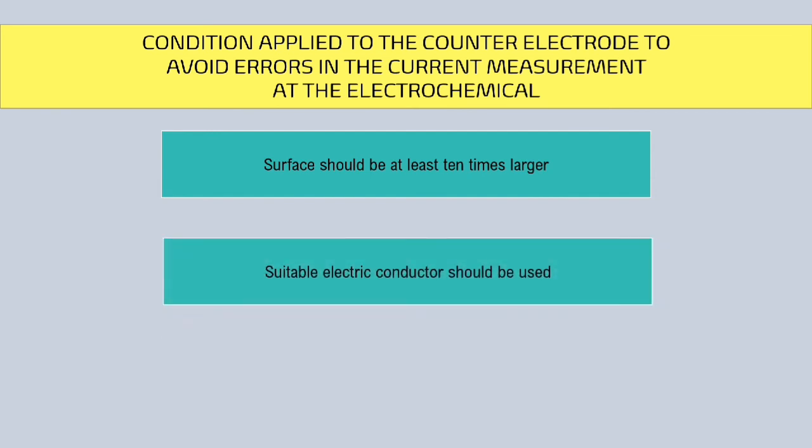Second, a counter-electrode should be made of a suitable electrical conductor. A small amount of current can escape through the interface at the counter-electrode if the counter-electrode is a poor conductor, affecting the electrochemical cell's recorded current.